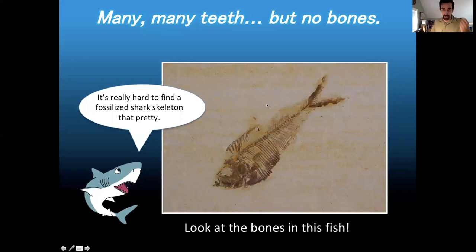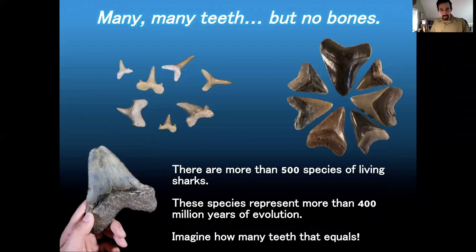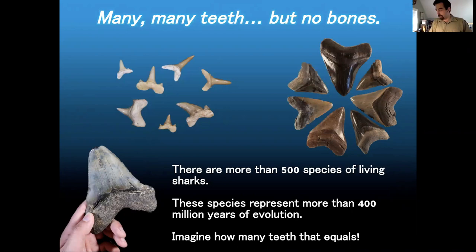We know that sharks have been around for at least 400 million years — sometimes we get lucky and find parts of their skeleton, but oftentimes we find teeth. Many, many teeth. Fossil shark teeth are some of the most commonly collected fossils in the whole world. We have 500 living species of sharks right now, and many more extinct species. Each shark has been turning out one tooth after another and losing teeth, so there are a lot of shark teeth to be found.